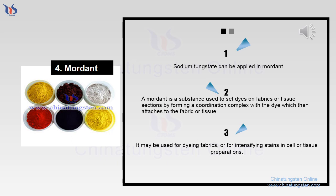Mordant: Sodium tungstate can be applied as a mordant. A mordant is a substance used to set dyes on fabrics or tissue sections by forming a coordination complex with a dye which then attaches to the fabric or tissue. It may be used for dyeing fabrics or for intensifying stains in cell or tissue preparations.